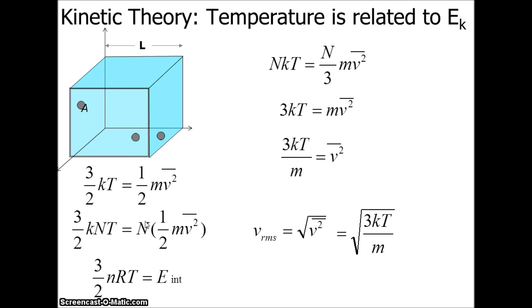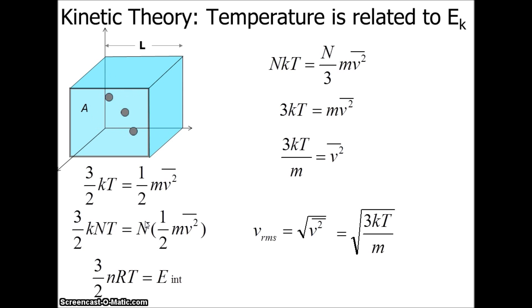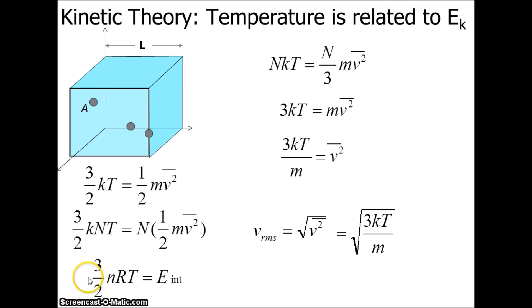The change in internal energy of a monatomic gas, which has 3 degrees of freedom, is given by (3/2)NRT. That is the internal energy.